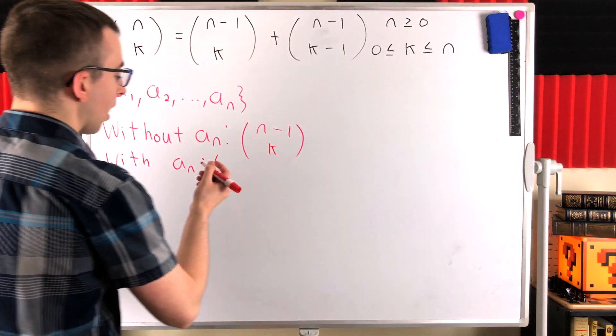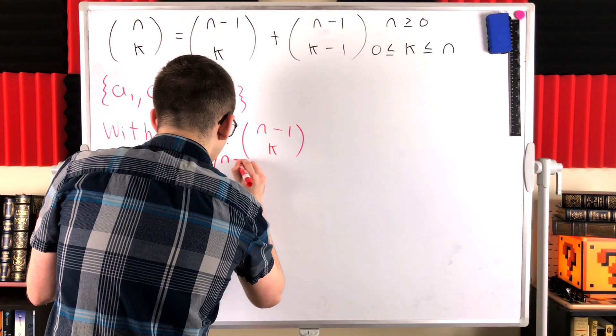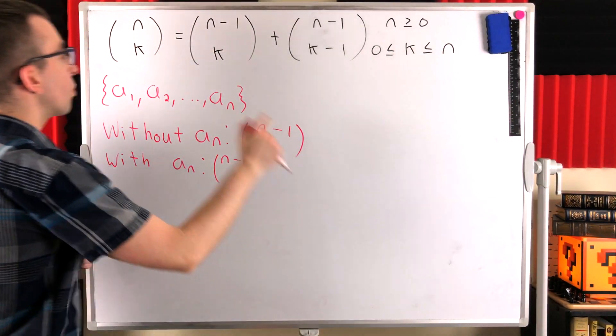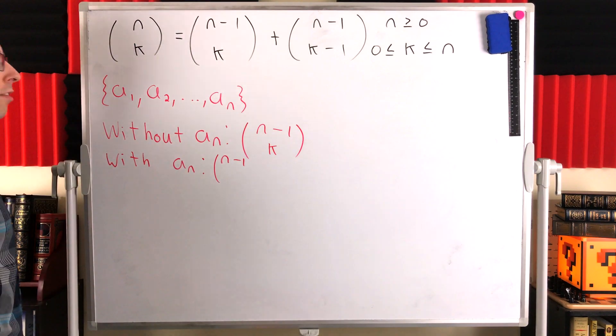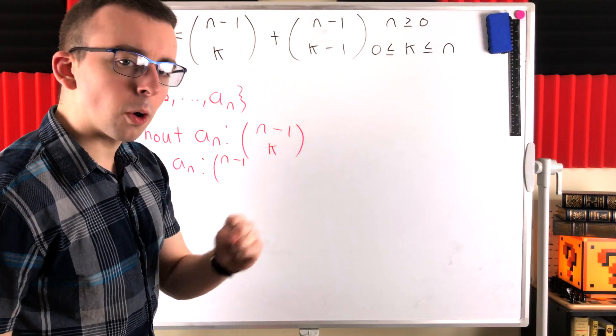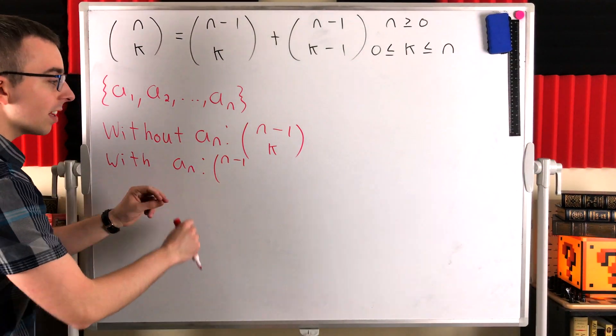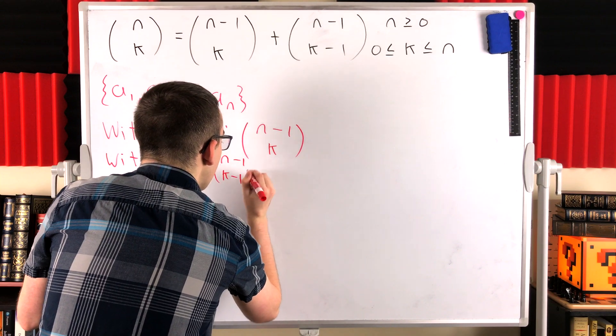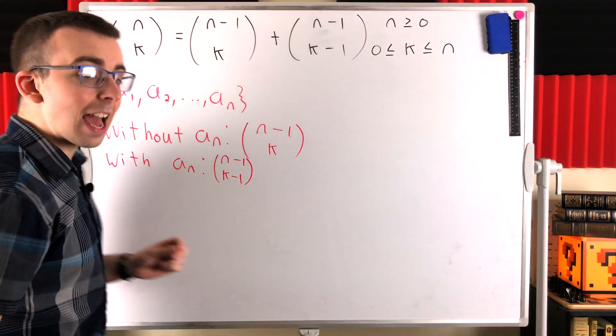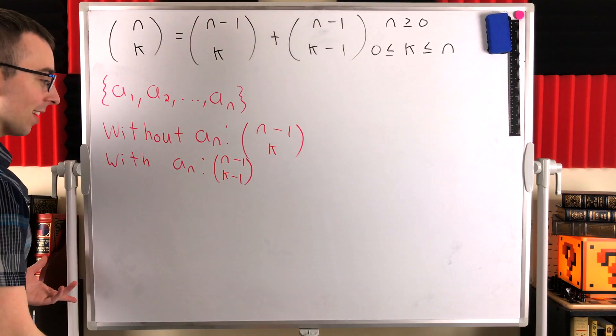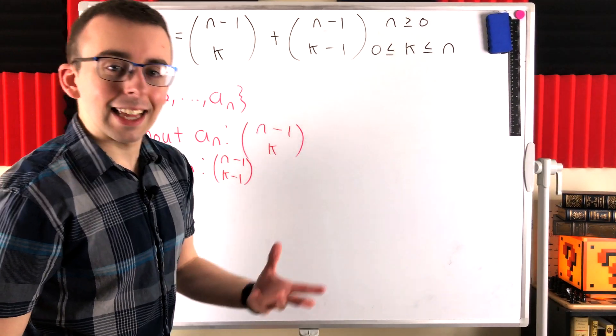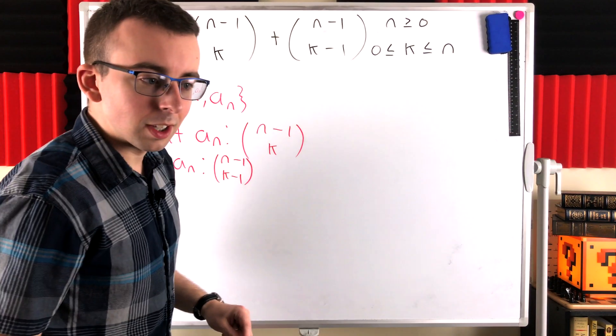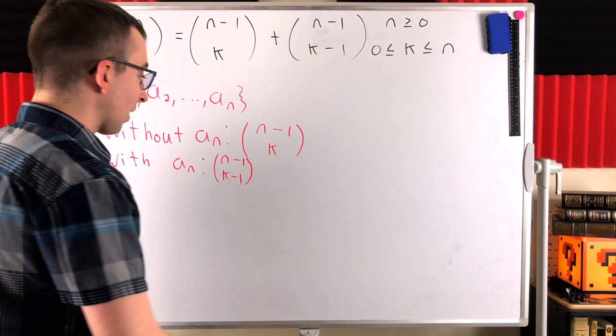So there are again n minus 1 other objects to choose from. And we want to choose a total of k objects because remember that we're counting the number of ways we can pick k objects from a collection of n objects. We want to pick a total of k objects. Since we've already decided we're going to include a_n in these collections, we have k minus 1 choices left to make among the other n minus 1 objects in the set. So we have just counted all of the collections of size k from a set of n elements that do include this element a_n that we have fixed. And that's it.